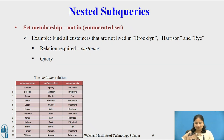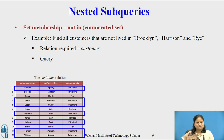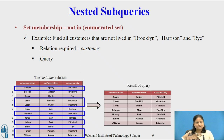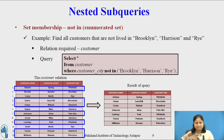Consider an example of set membership with the NOT IN operator: find all the customers that do not live in Brooklyn, Harrison, and Rye. Tuples shown in the blue box indicate all the customers not living in Brooklyn, Harrison, and Rye. Results show that seven customers do not live in Brooklyn, Harrison, and Rye. The query is: SELECT * FROM customer WHERE customer_city NOT IN ('Brooklyn', 'Harrison', 'Rye').